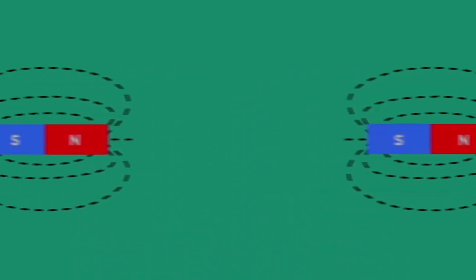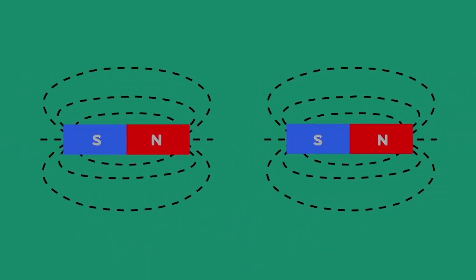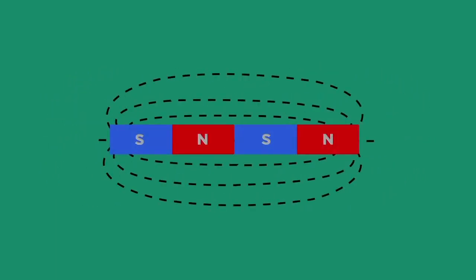Let us see what happens if we bring a North and South Pole towards each other. They attract, so unlike poles attract.